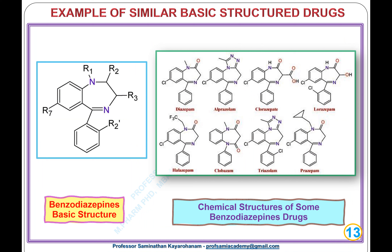Examples of similar basic-structured drugs: benzodiazepines are the basic structure for various drugs like diazepam, alprazolam, clonazepam, lorazepam, halazepam, clobazam, triazolam, and prazepam.